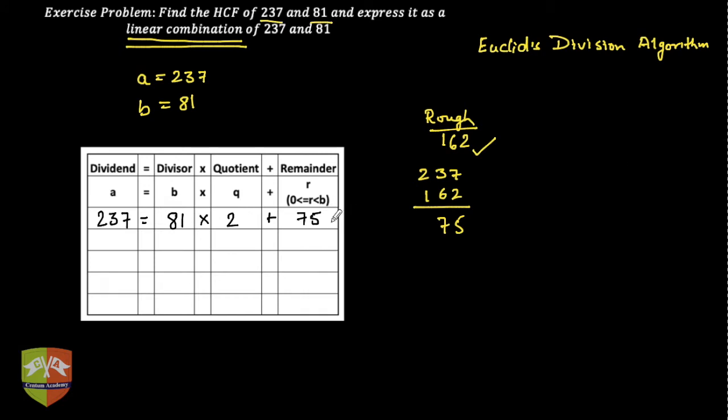Now check, is the remainder here 0? Clearly not. It is 75 which is not equal to 0. The next step would be b becomes the new a. So 81 will be written here and 75, the remainder, comes to b's place. Now how many times will 75 go into 81? Clearly one time. So 75 into 1 plus what? Plus 6. Is 6 equal to 0? No.